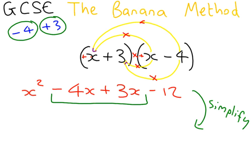3 take away 4 is minus 1. So the answer here is minus 1x, which we can just write as minus x. So our final answer here is x squared minus x minus 12.